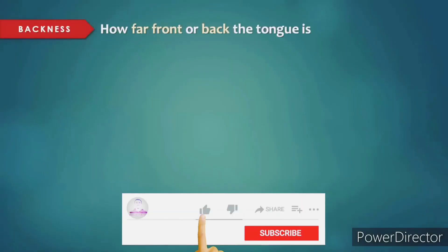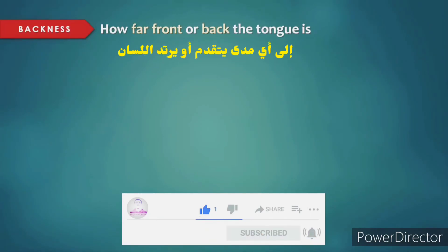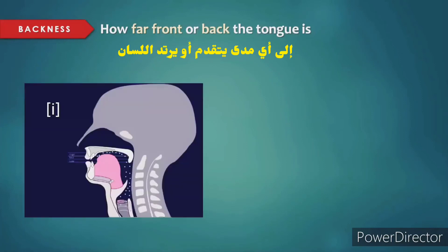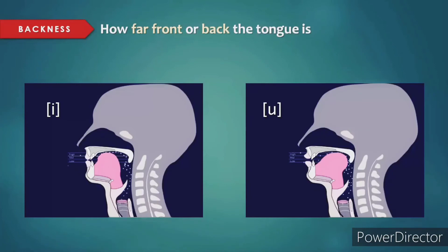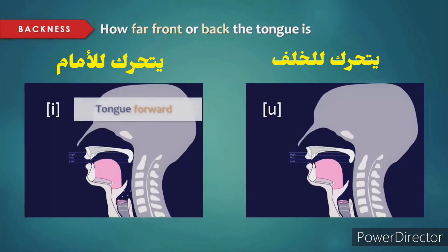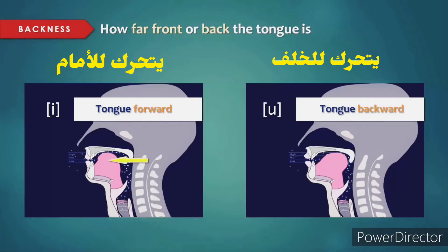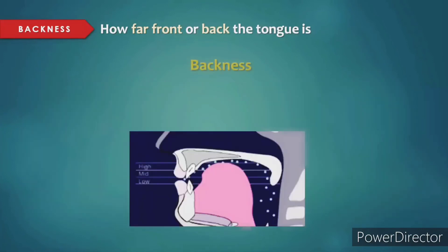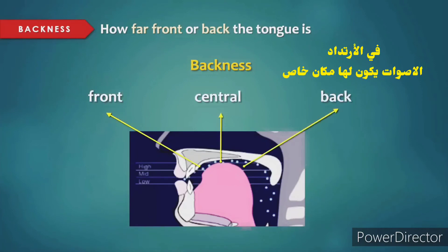Backness refers to how far front or back the tongue is when producing the vowel. Consider the vowels ee and oo — if you say these in succession, you may notice your tongue moving forward and backward: ee, oo, ee, oo. In terms of backness, vowels are either considered front, central, or back. Ee is a high vowel but also a front vowel, while oo is a back vowel.